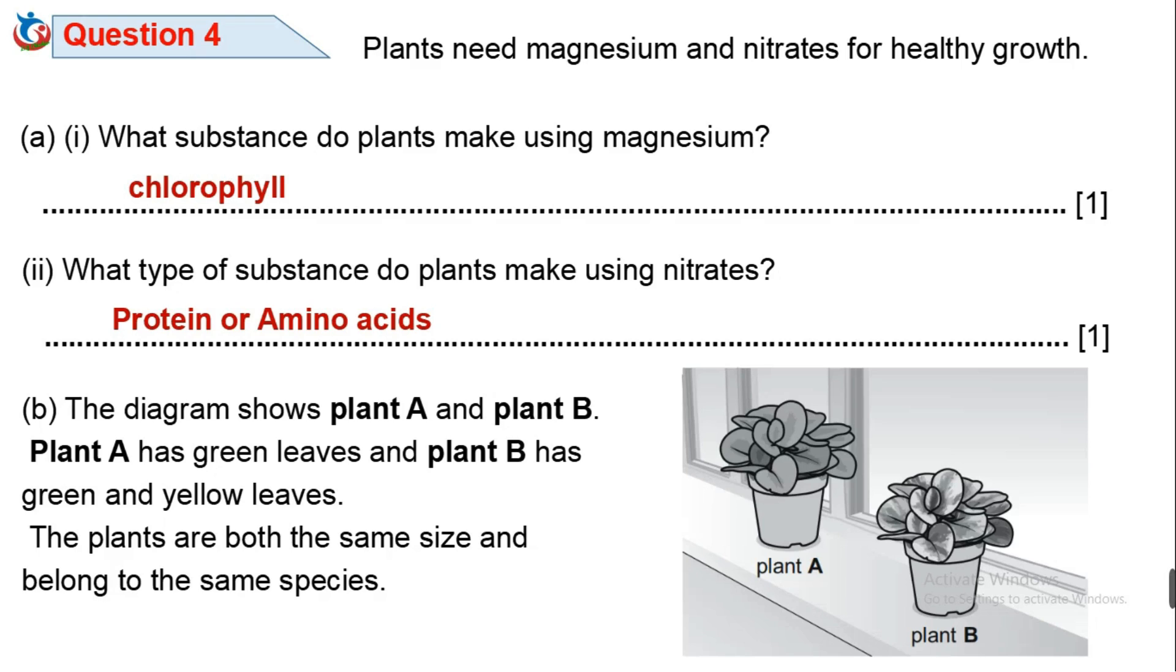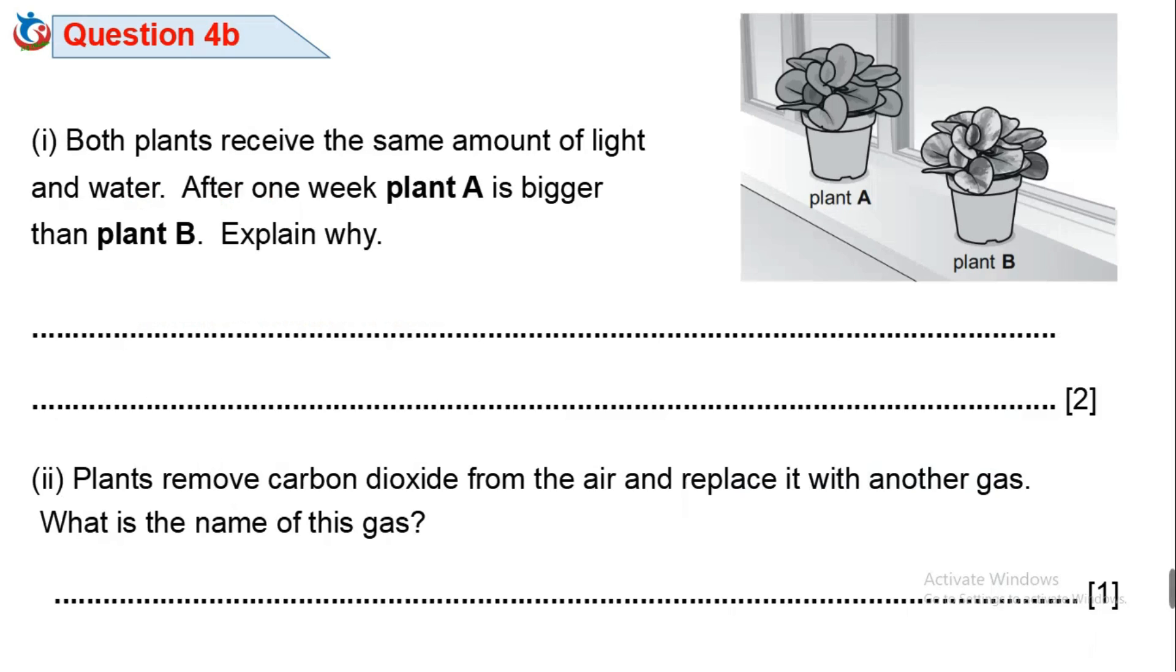Question 4B. The diagram shows plant A and plant B. Plant A has green leaves and plant B has green and yellow leaves. The plants are both the same size and belong to the same species. Question 4B1. Both plants receive the same amount of light and water. After one week, plant A is bigger than plant B. Explain why.